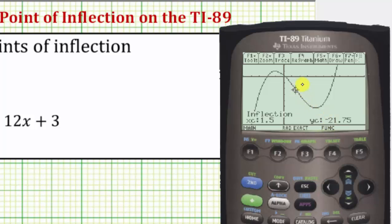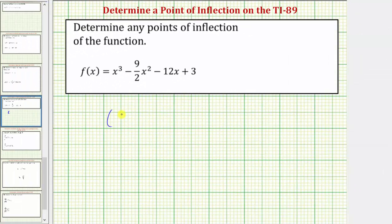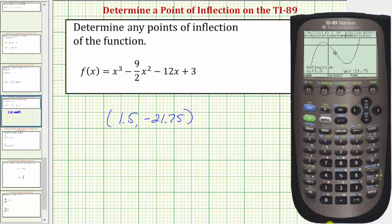Notice how the cursor is on the point of inflection, and down below it's giving us the coordinates of the point of inflection. The point of inflection is at 1.5 comma negative 21.75. The function changes from concave down to concave up at the point 1.5 comma negative 21.75.